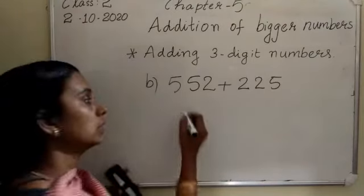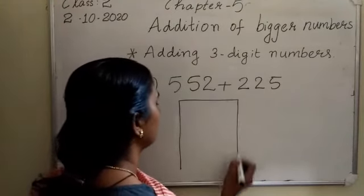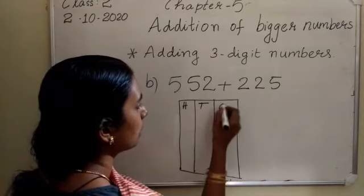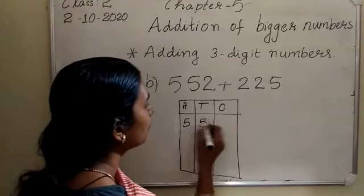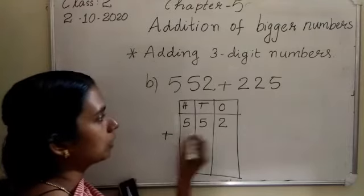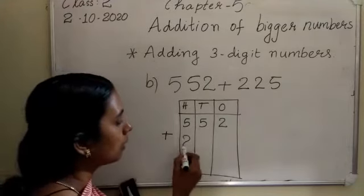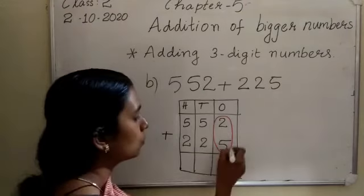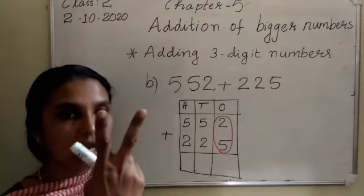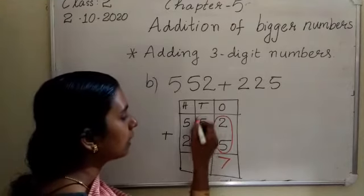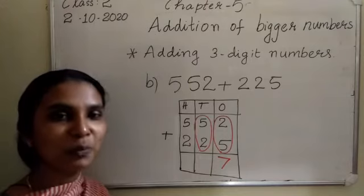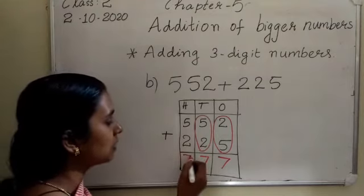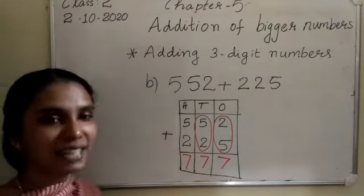First of all, draw the box with 100's place, 10's place, and 1's place. The first number is 552, plus the second number 225. Then add: 5 plus 2 in the 1's place — 5 in your mind, 2 fingers after 5 — 6, 7. Then again 5 plus 2 in the 10's place — it is 7. Then again 5 plus 2 in the 100's place — it is 7. So the answer is 777.